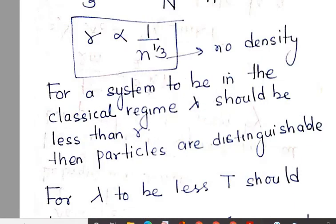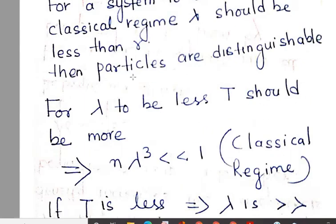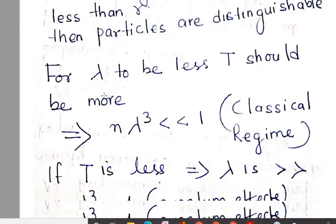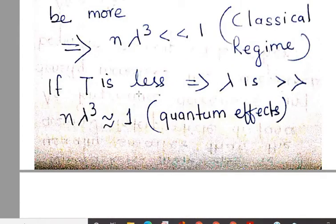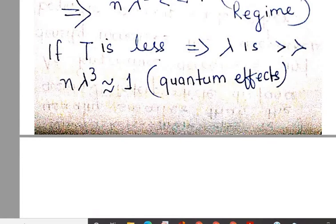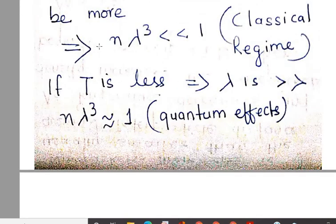For a system to be in the classical regime, lambda should be less than R — then the particles are distinguishable. For lambda to be less than R, T should be larger, and Nλ³ ≪ 1 corresponds to the classical regime. If temperature is less, then lambda is much greater and Nλ³ ≥ 1, which corresponds to quantum effects, where lambda³ is higher meaning T is less.